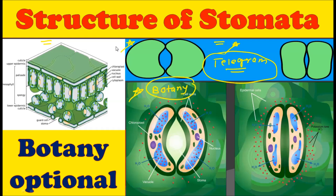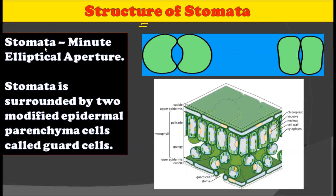Let's start the structure of stomata. The stomata in a plant is a very minute elliptical aperture. As you can see in this diagram, we are talking about this aperture — the small minute aperture which is present in the stoma. When the stoma is open, this aperture looks bigger in size, while when the stomata is closed, this aperture looks very small. So stomata have a very minute and elliptical aperture.